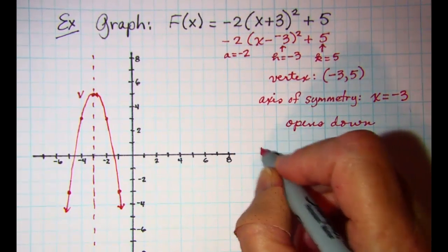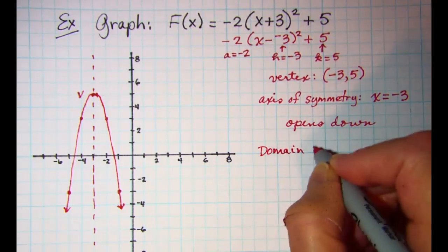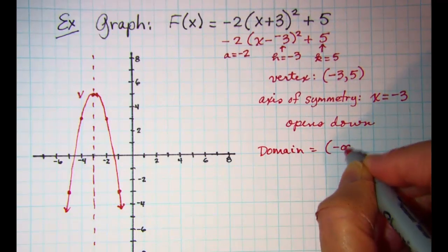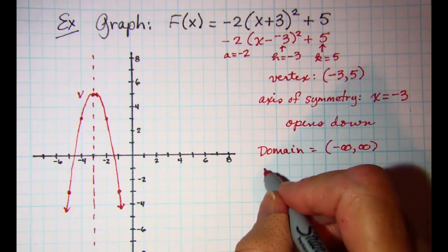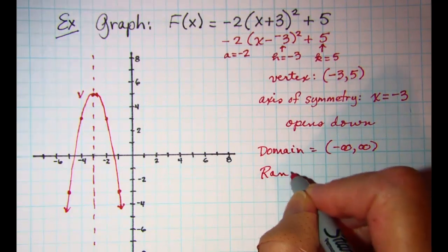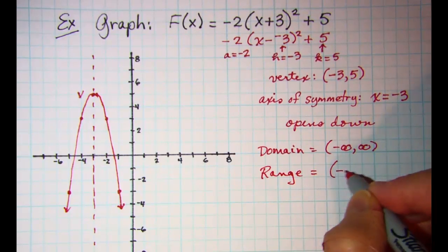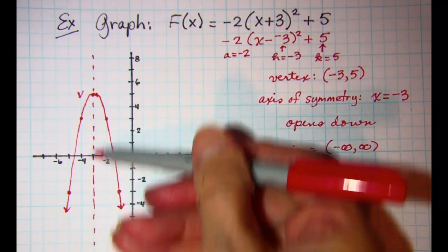The domain on this graph is all real numbers, and the range goes from negative infinity to 5, including the 5.